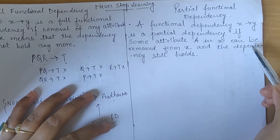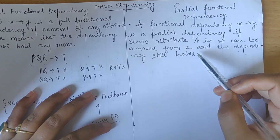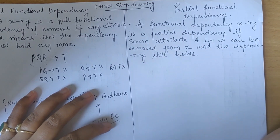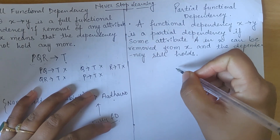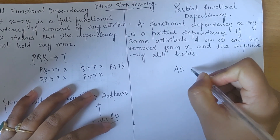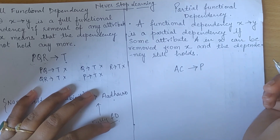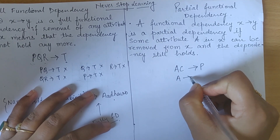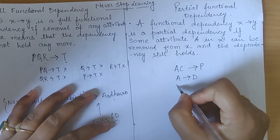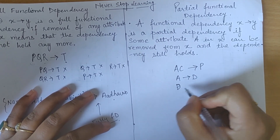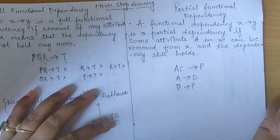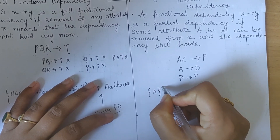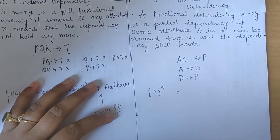Now understand partial functional dependency. A functional dependency is a partial dependency if some attribute in X can be removed from X and the dependency still holds. Let us suppose I have AC determines P, and there is another dependency A determines D and D determines P.